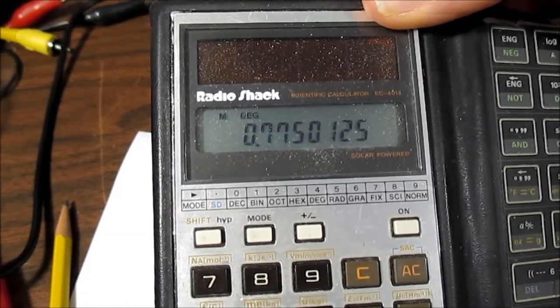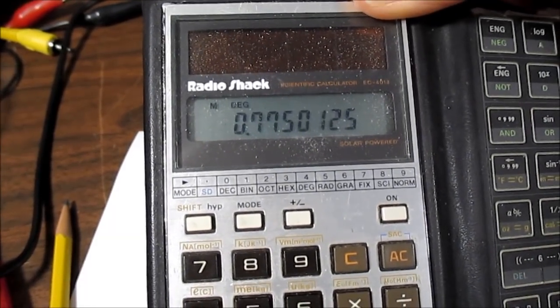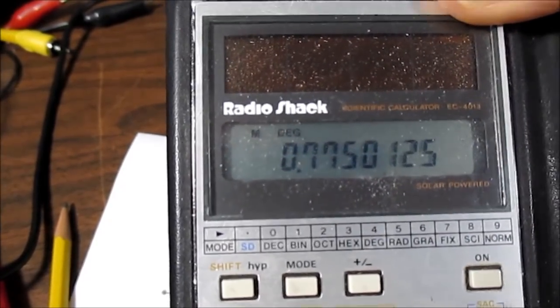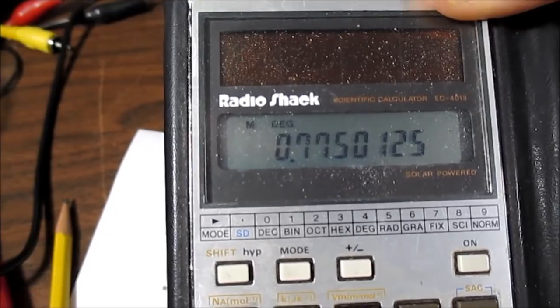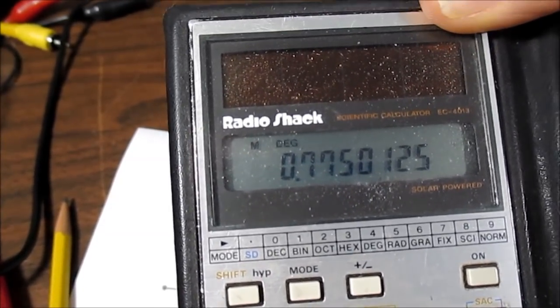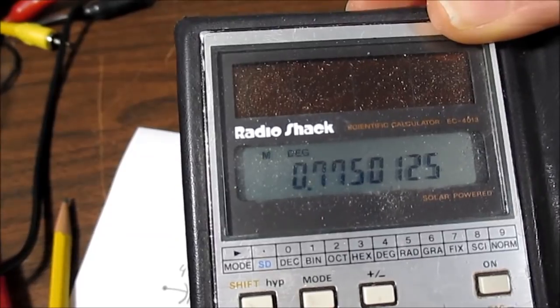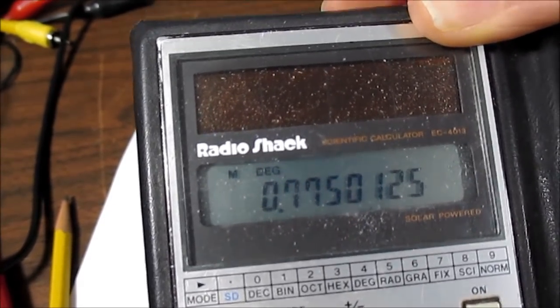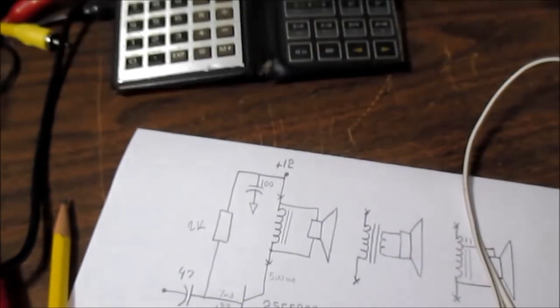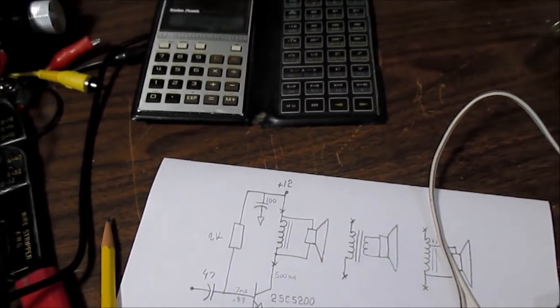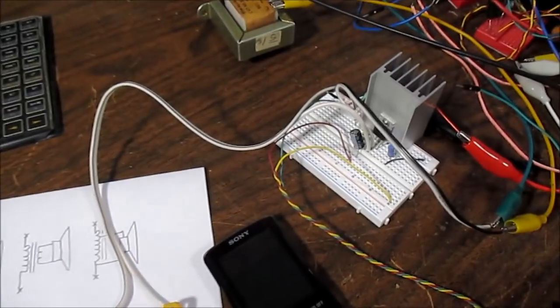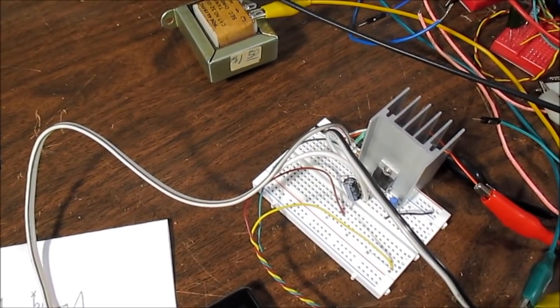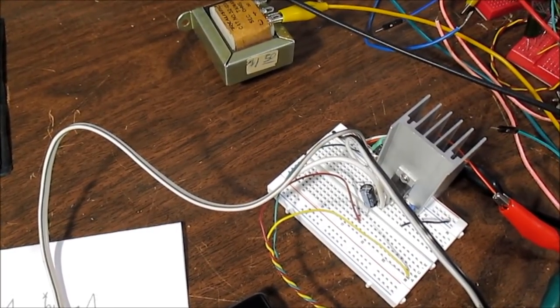So 2.49 volts RMS squared divided by the load impedance of 8 ohms gives it 775 milliwatts. And that's about what I would expect from a 12 volt supply and a half an amp of current with a class A stage like this. Just shy of a watt.